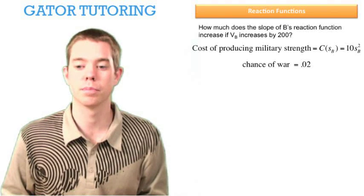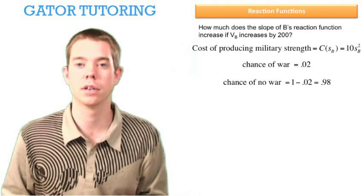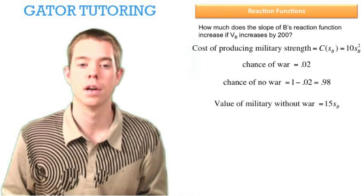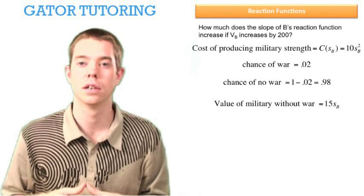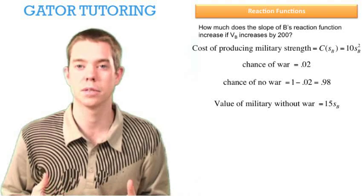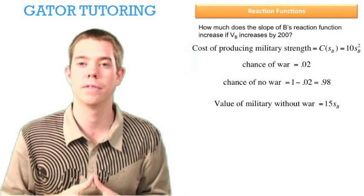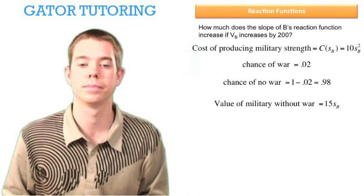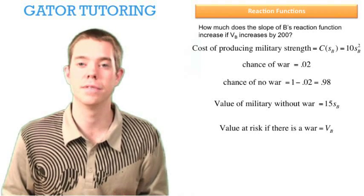The chance of war is 2% for both countries, which means the chance of no war is 1 minus 2%, or 98%. The value of military without war, they told us, was 15 times the military strength, which we define as SB or SA. Since we're only talking about country B right now, 15*SB is the value of our military without a war. The value at risk if there is a war, we define as VB.